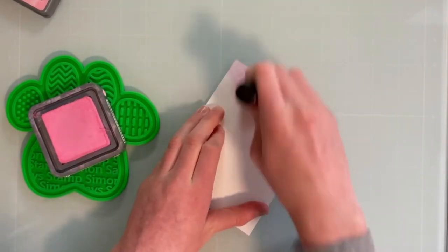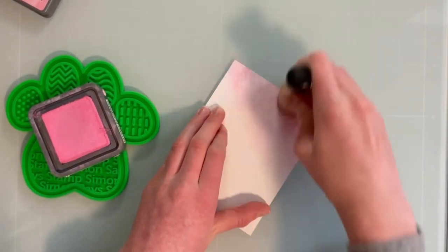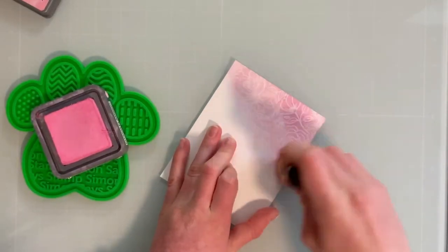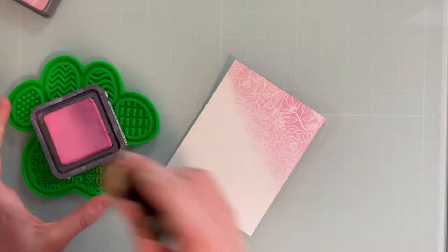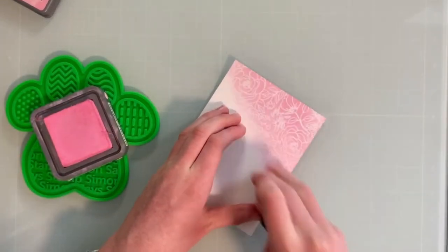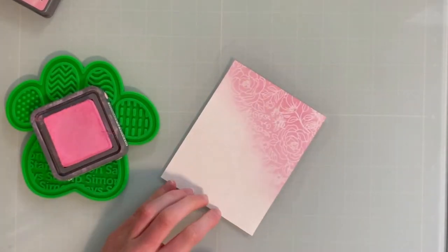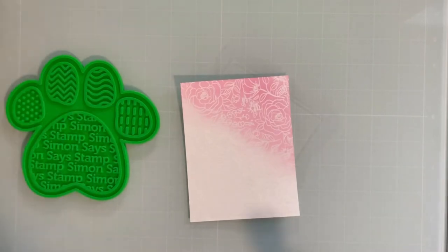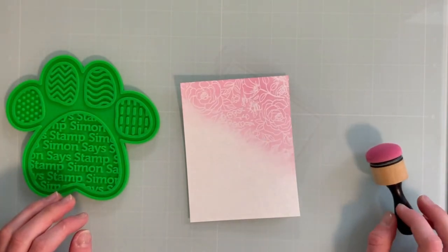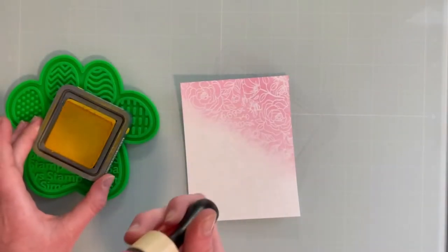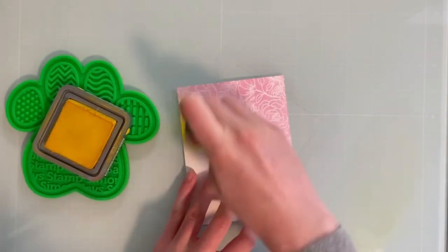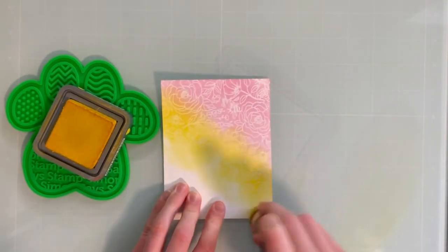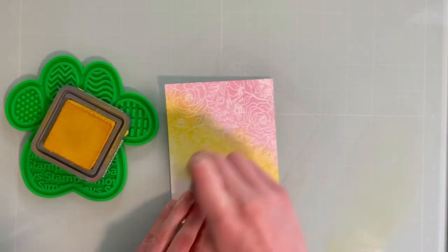So this is similar to the last one. I'm going to be using all the same inks, so Kitsch Flamingo, Mustard Seed, and Salvaged Patina in the Distressed Oxide inks. And these I'm just going to be using a domed blending foam with this ink blending tool. And I'm just going to blend between these colors. The more ink you get on the page, or the more, yeah, ink you get on the page, the easier it is to blend between the colors.